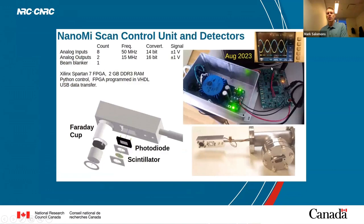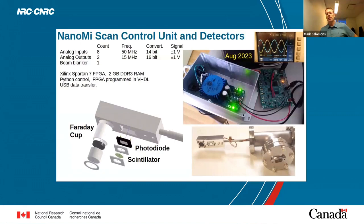We've developed our own scan control unit from scratch using an FPGA. This will all be housed in one box, and the scan control unit could be used for all sorts of different things — not just electron microscopy but also scan probe microscopy. We use a Spartan 7 FPGA, done completely from scratch, and all that information is available. There's a vast array of detectors that can be made.